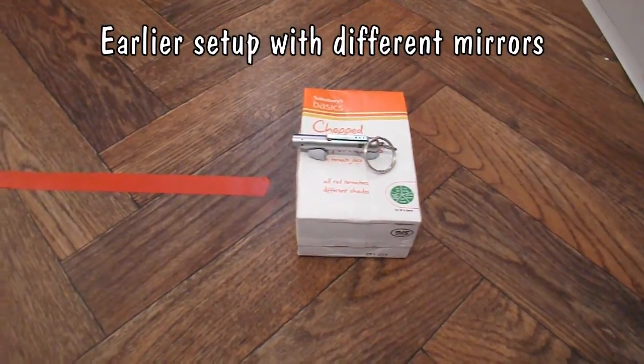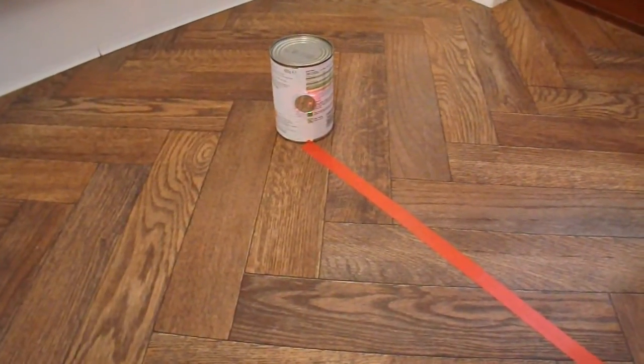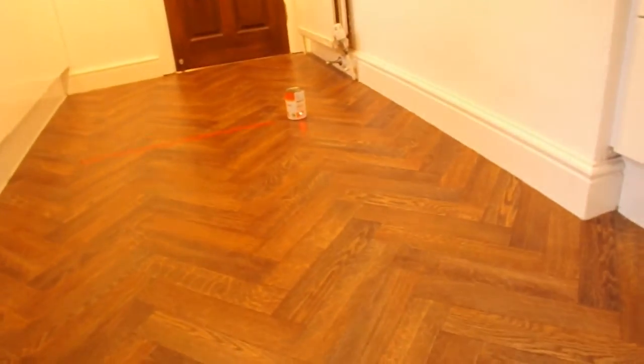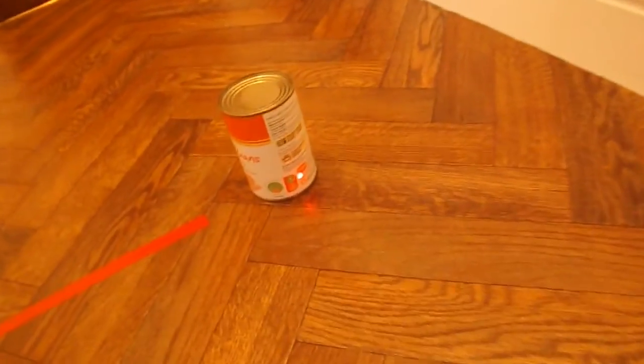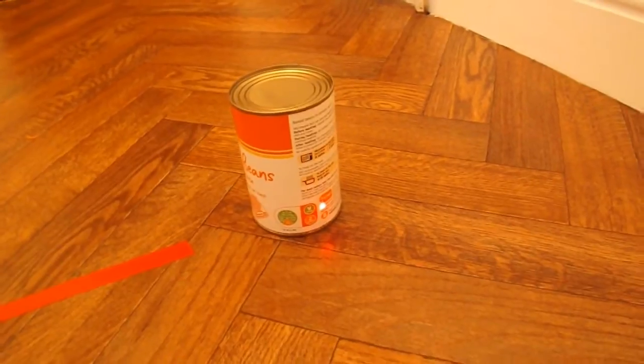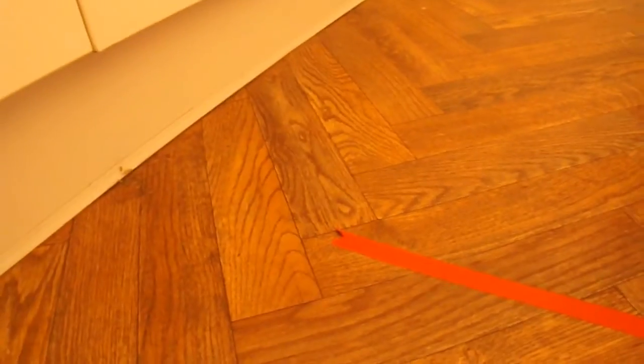There's my laser pointer pointing across at that tin of beans, touching a mirror, going down to that tin of beans. So I need to put the mirror on there to point it across to have the receiver just there.